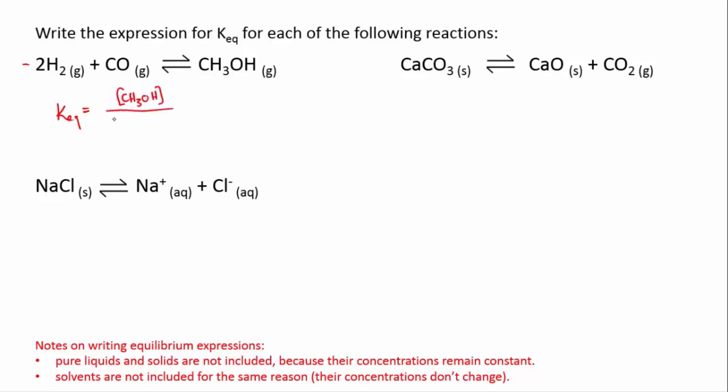...the concentration of hydrogen times the concentration of carbon monoxide. And then you can see that hydrogen has a stoichiometric coefficient of two, so we raise its concentration to the power of two—it's squared—and the others have stoichiometric coefficients of one, so they stay the same. So that is the equilibrium expression for that particular reaction.